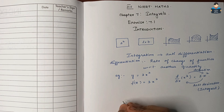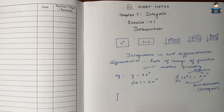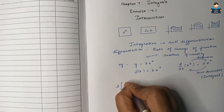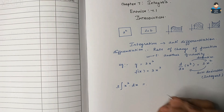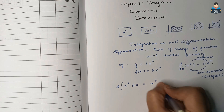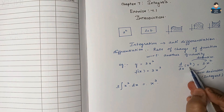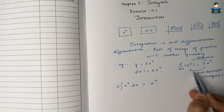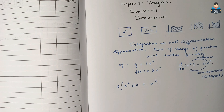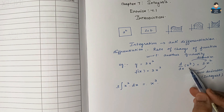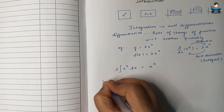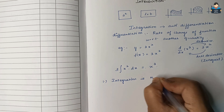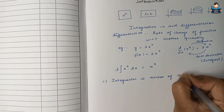Now, how do we represent the anti-derivative? The integral of 3x² dx equals x³. So, x³ is the derivative — its anti-derivative is x³. That means the integral of 3x² is x³. So integration is the reverse of differentiation.